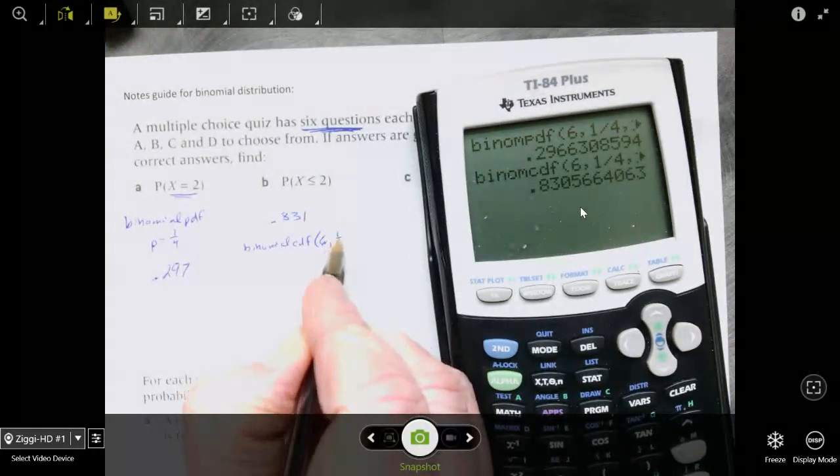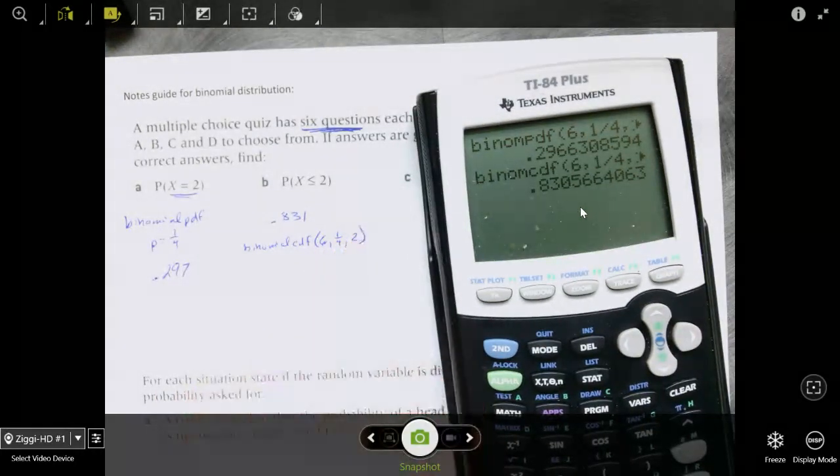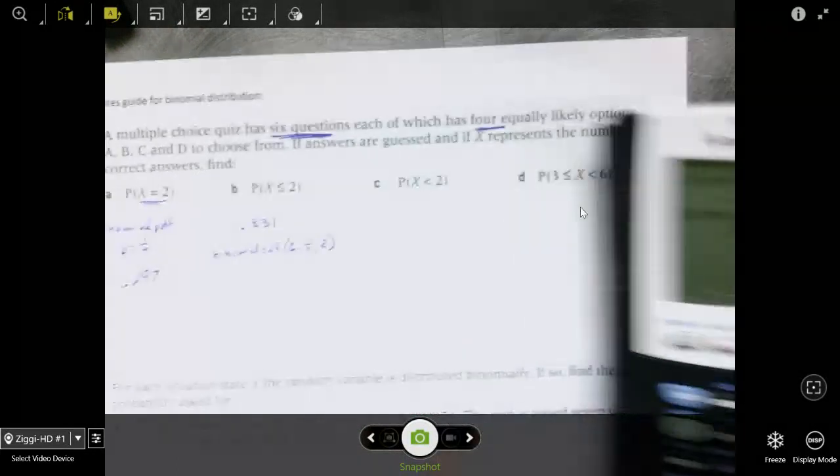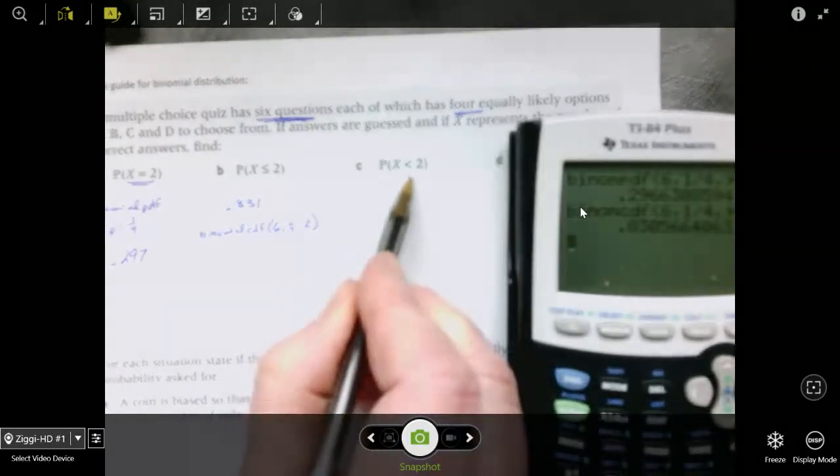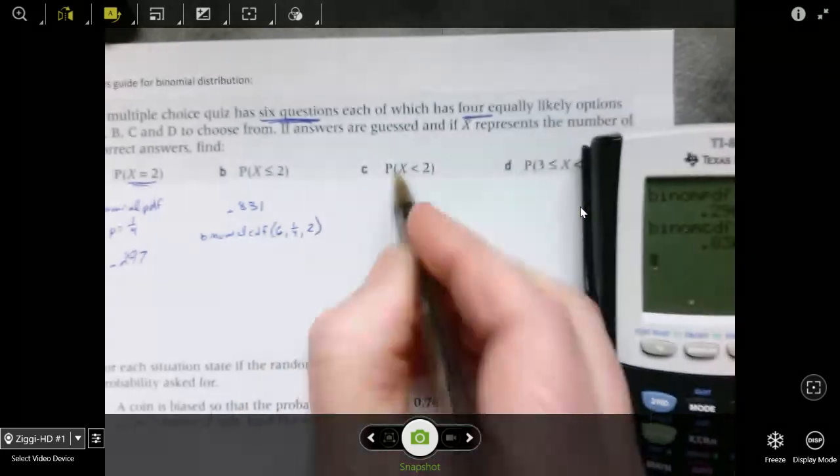Okay, now, the probability that x is less than 2. We're not including 2. So this is really the same as the probability that x is less than or equal to 1. So I'm adding the 1 and the 0.